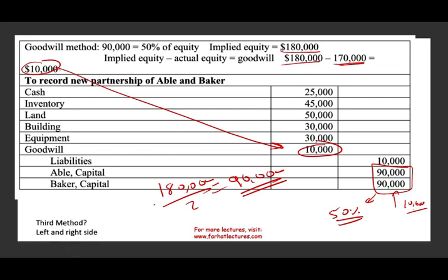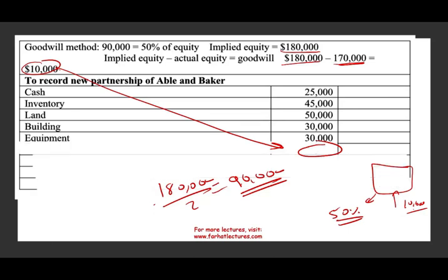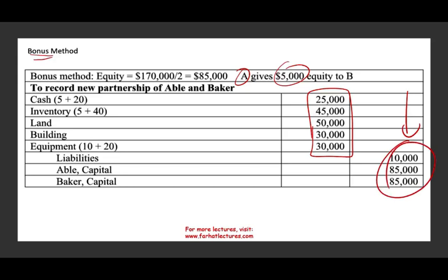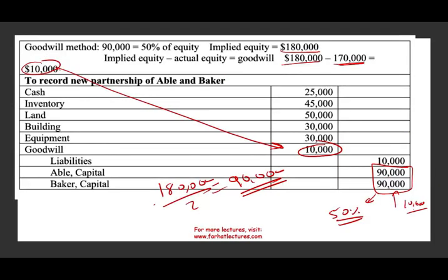Is there a third method? Yes. The third method is no goodwill and no bonus — the exact method. We debit all the assets for what they are and credit the liabilities for what they are. Abel's balance will be 90,000 and Baker's balance will be 80,000 — exactly what they contributed. Under the bonus method, we adjust the capital balances on the right side. Under the goodwill method, we adjust the debit side of the entry.